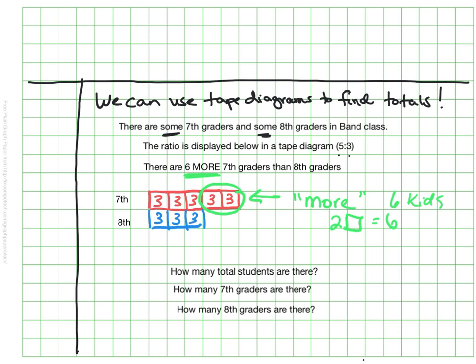I now know that there's one two three four five six seven eight total spaces and each one represents three kids so there must be 24 total.